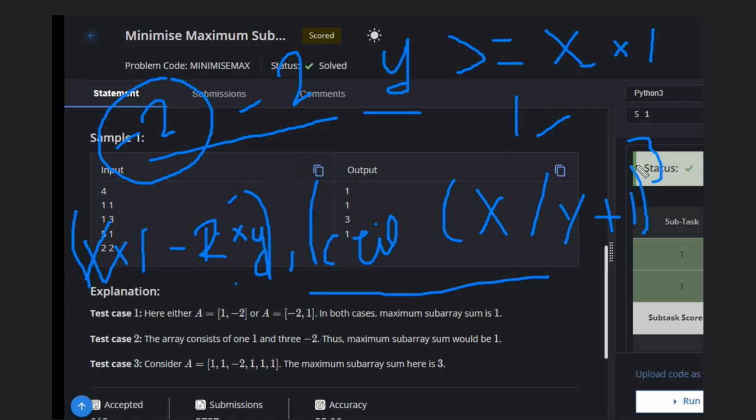You need to take the maximum of this value and this value. This will, you will get your answer because we need to partition and also need to check if it is possible. If it is possible to just separate it out, -2, like if it is 1, only 1, that can be the case for this problem. So if you do this, like x minus 2 times y comma ceiling of x divided by y plus 1, if you do this you will get your answer. You need to take the maximum of these two values. Maximum of this and this, so we will get your answer.